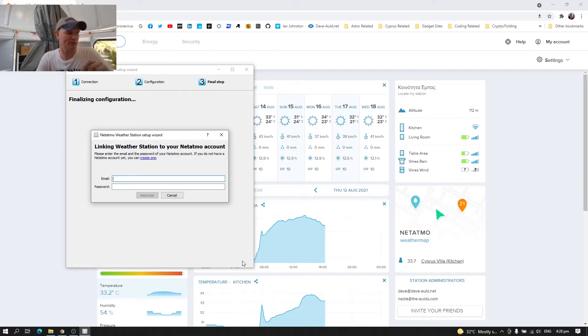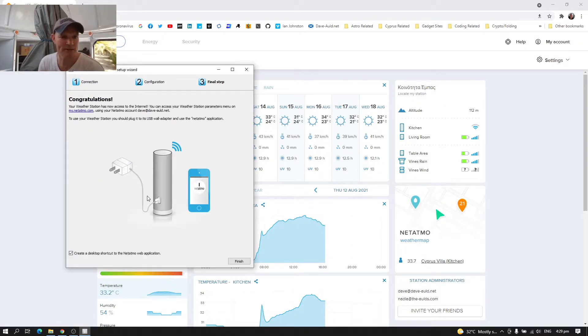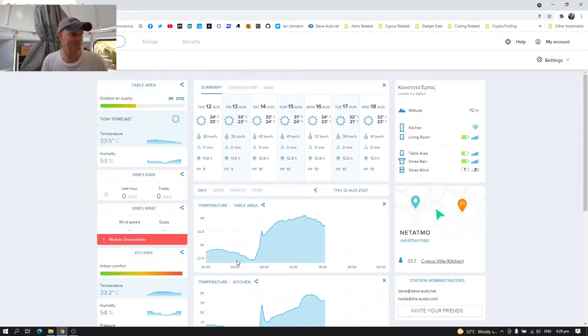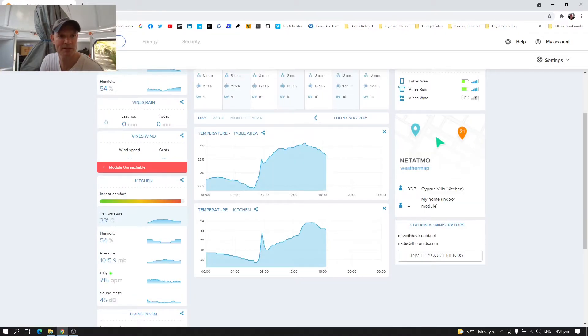Okay, so now that we've set the Wi-Fi up on the weather station, we just need to assign it, associate it with my normal account. And that is it now connected. So we can click finish and we can plug it back into the normal power brick for the weather station and let it boot. So let's do that now. Take out this cable I had and put the power brick back in. So now we can see up on the top here. So it's got Cyprus Villa kitchen. So that's the original weather station.